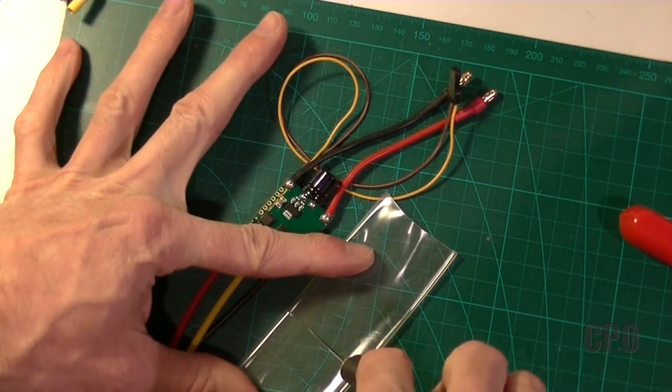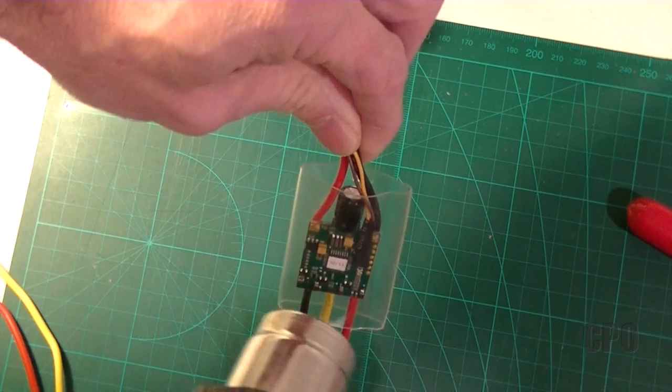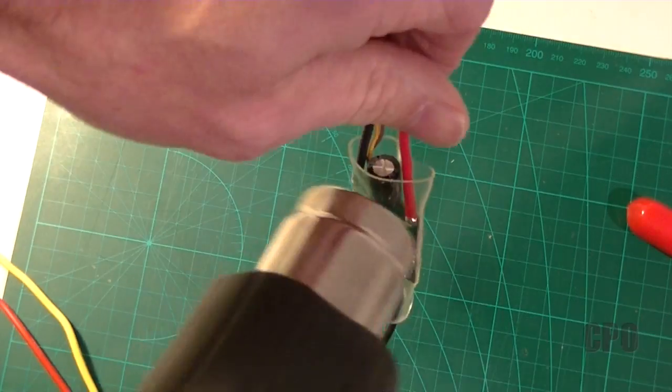I have some clear 25 millimeter shrink tubing that I'll use to cover the ESC now that I'm done. And of course I hit it with my favorite heat gun and everything shrinks up nicely.